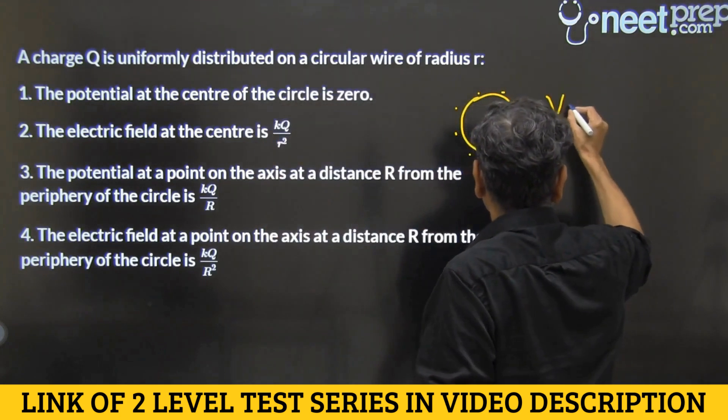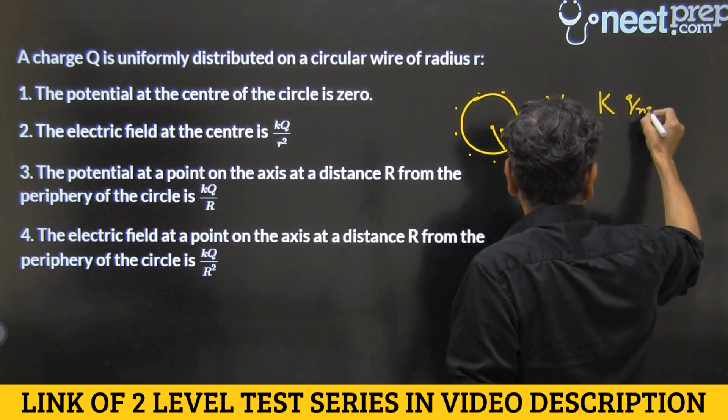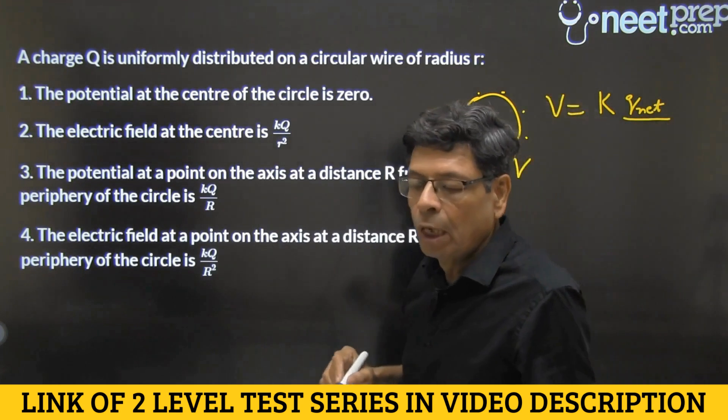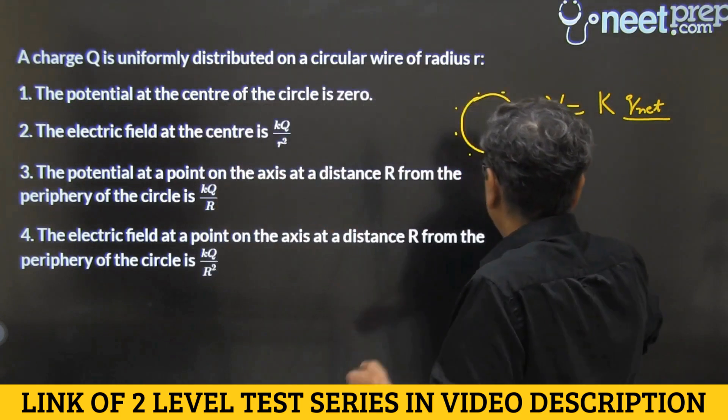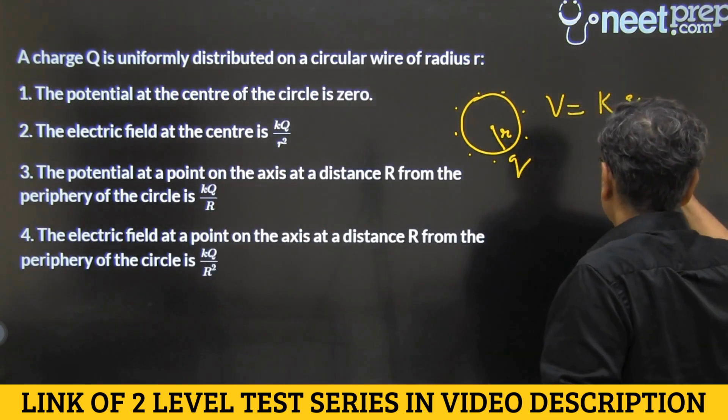This version of the formula maybe is useful: KQ net, which can be used only if all the points where the charges are, whose potential is to be found at a particular point, then that point is equidistant from all the charges. Then use this formula.